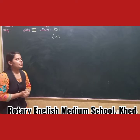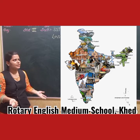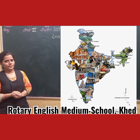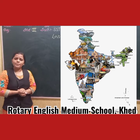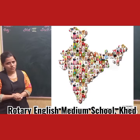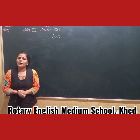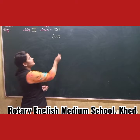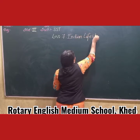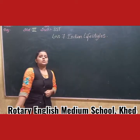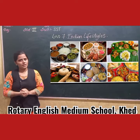So my dear children, so far you have learned about our country — different states and union territories. As you all know, India is a vast country with different states and union territories. People in different states speak a different language and wear a different dress. So today we are going to learn Lesson Number 7: Indian Lifestyles. In this lesson, we are going to learn about the food of different regions and the dress worn in different regions.